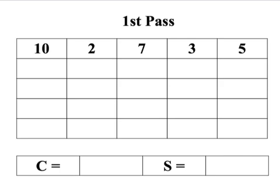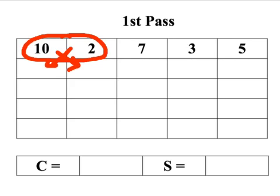Here's a short example. We've got the numbers 10, 2, 7, 3, and 5, and we want to sort these into ascending order using the bubble sort algorithm. The very first thing we do is look at numbers 10 and 2. 10 is obviously bigger than 2, so we swap those over — I'll use arrows to indicate the swap — so 2 goes there and 10 goes there, and I'll fill up the rest of the list.